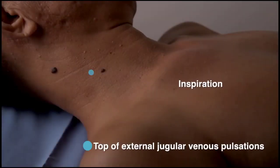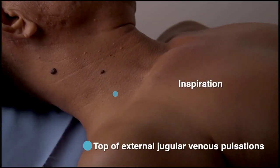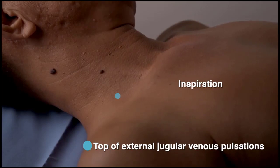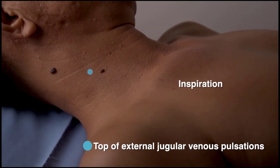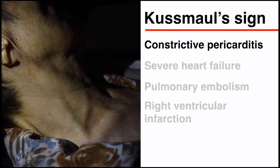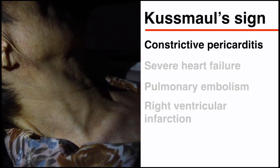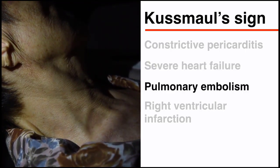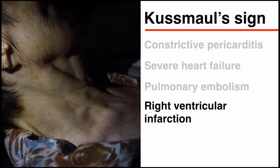Paradoxical elevation of the jugular venous pressure during inspiration is called Kussmaul's sign. In a healthy person, the venous pressure decreases during inspiration because pressure on the right side of the heart falls as intrathoracic pressure decreases. The differential diagnosis for Kussmaul's sign includes constrictive pericarditis, severe heart failure, pulmonary embolism, and right ventricular infarction.